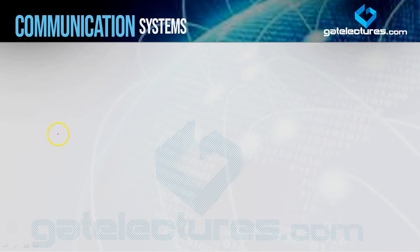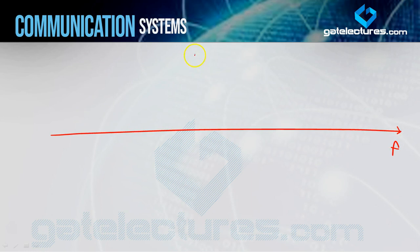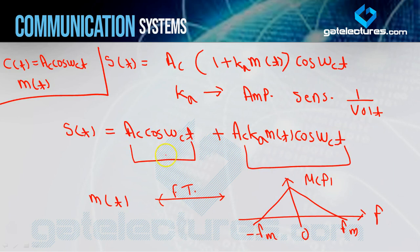If I draw S(F) — the Fourier transform of S(T) — the signal S(T) has two parts. The first part is AC cos(ωC t). We will draw the Fourier transform of AC cos(ωC t) and the Fourier transform of the second term AC kA m(t) cos(ωC t).